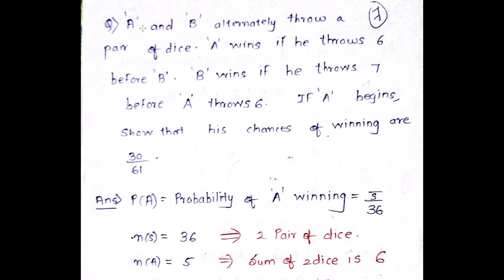There are two people, assuming A and B. They are alternately throwing a pair of dice. A wins if he throws 6 before B, and B wins if he throws 7. So what happens is that if A is starting first, if A throws 6, then A is winning. But if before A throws 6, my B throws 7, then B wins. So we have to understand the concept.